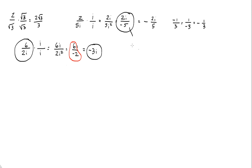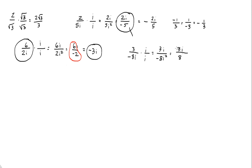Let's do another problem. What if I had 3 over negative 8i? I would multiply by i over i: that's 3i over negative 8i squared. We have an i squared, so we take rid of the i squared and change the sign. Your answer is 3i over 8.